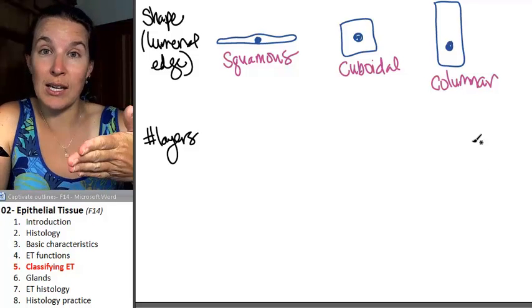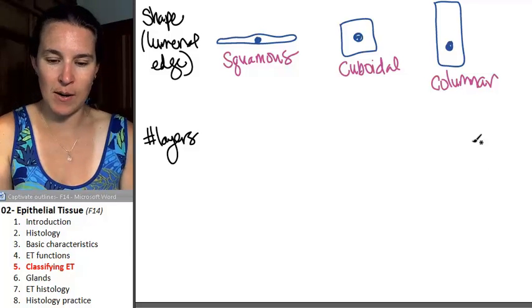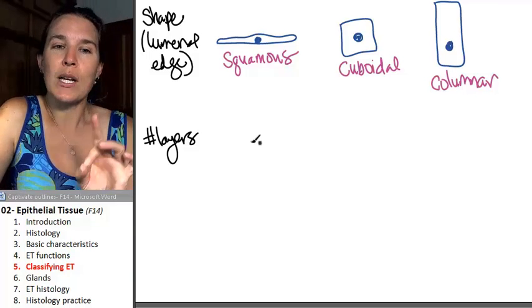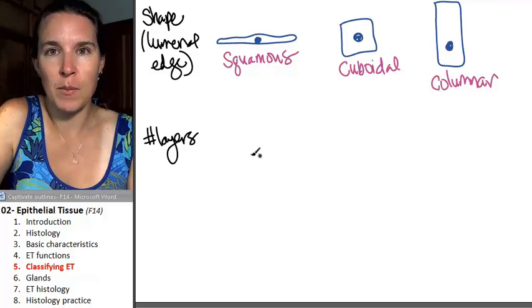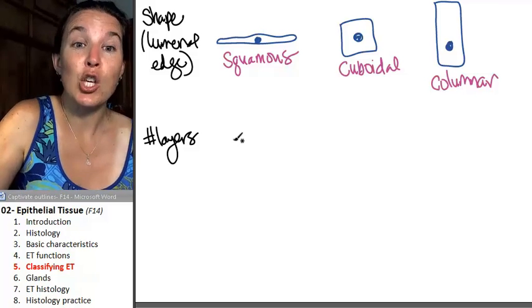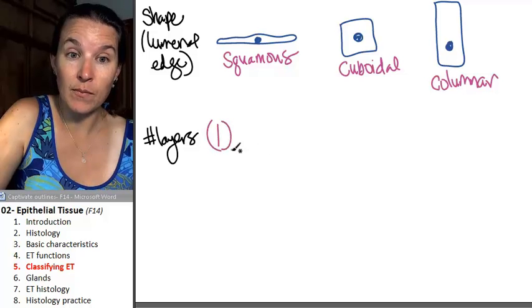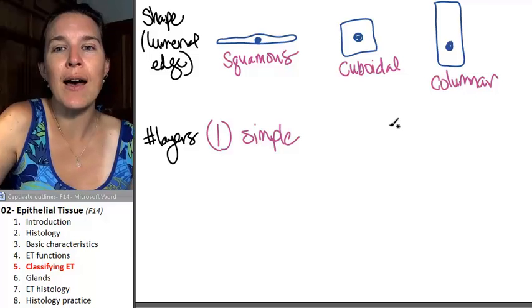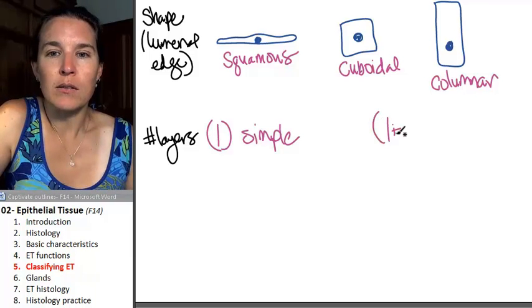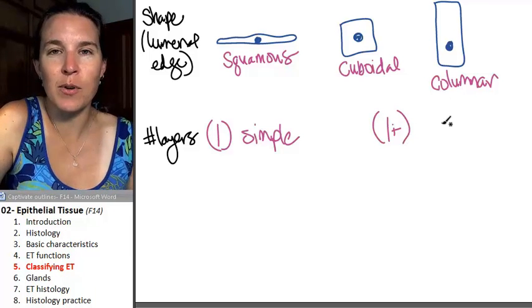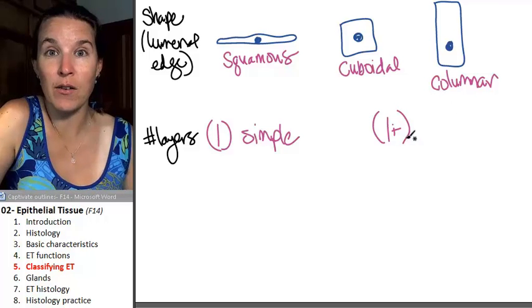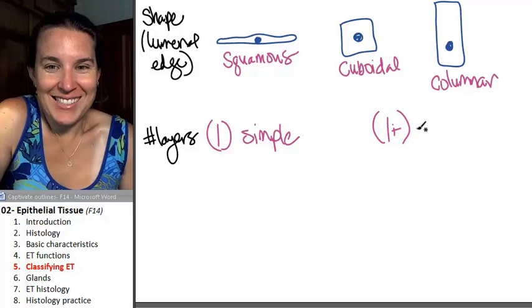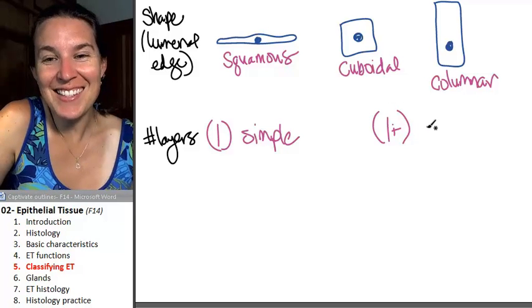Now, before we can actually name our different structures of epithelial tissue or different types of epithelial tissue, there's another piece of information. We need to know how many layers there are. You can have one layer, and then it's simple, or you can have more than one, greater than one, and then that is called stratified.